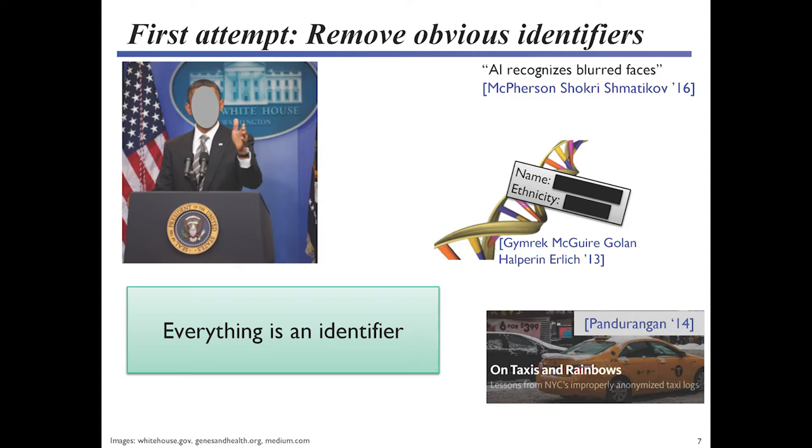One surprising example is that for many men in the U.S., you can predict their last name with reasonable confidence from just their genomic information. That's because most men in Western societies inherit their Y chromosome and their last name from the same person. There are lots of other examples — one I like is a taxi dataset from New York City that was anonymized and released, and it was possible to re-identify people, the rides they took, where they were going, and find out all sorts of things about people from it.